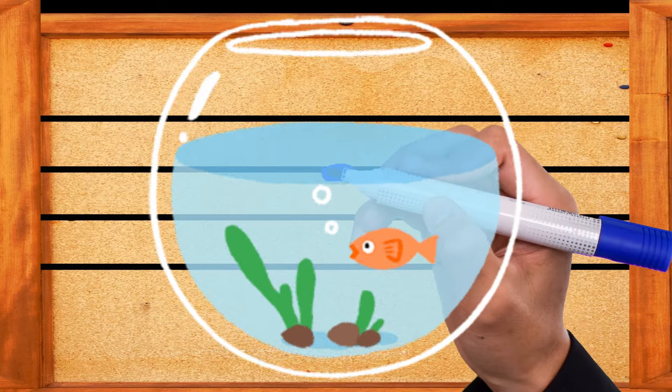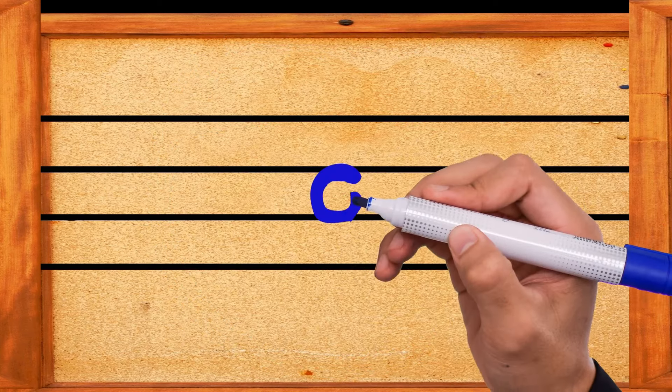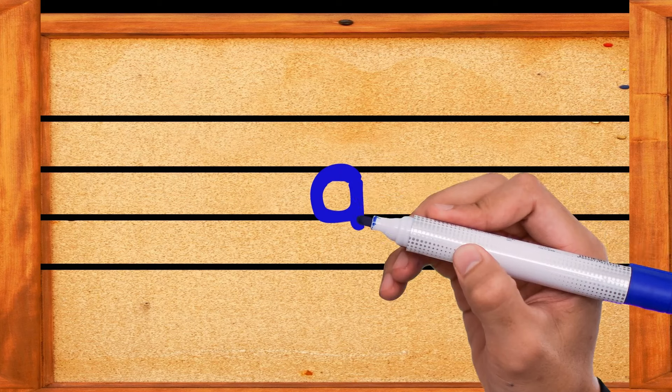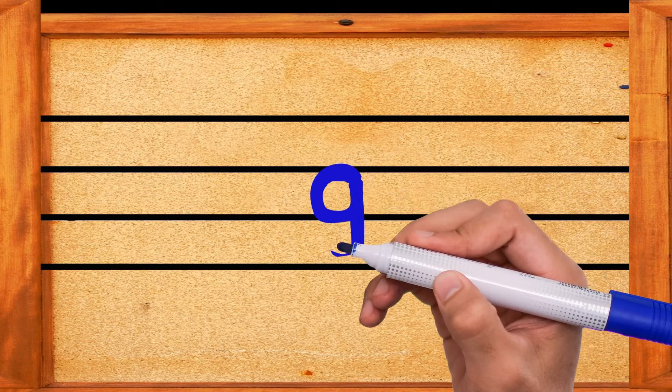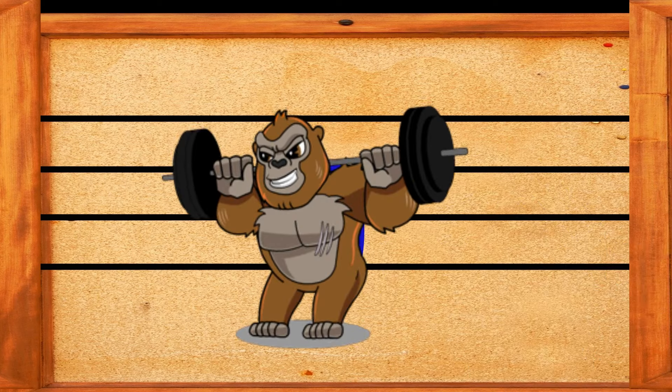Make a small curve, go slightly up, then go down and down, then make a small curve. This is the letter G. G is for gorilla.